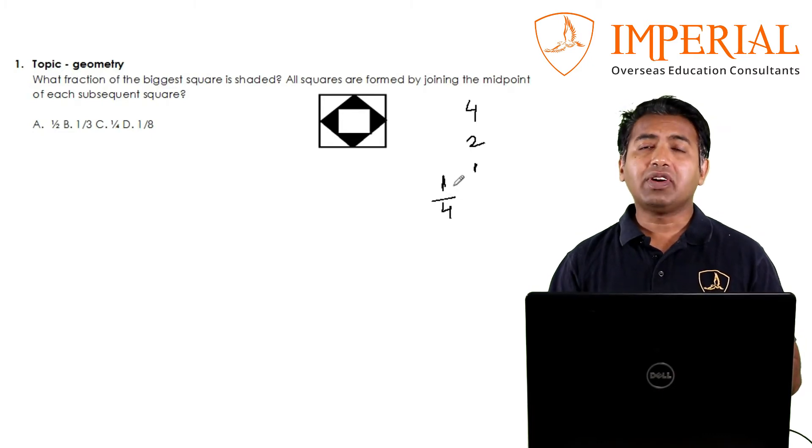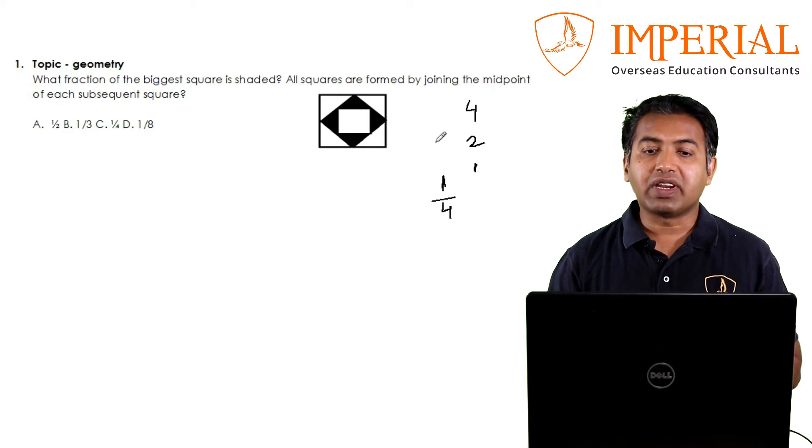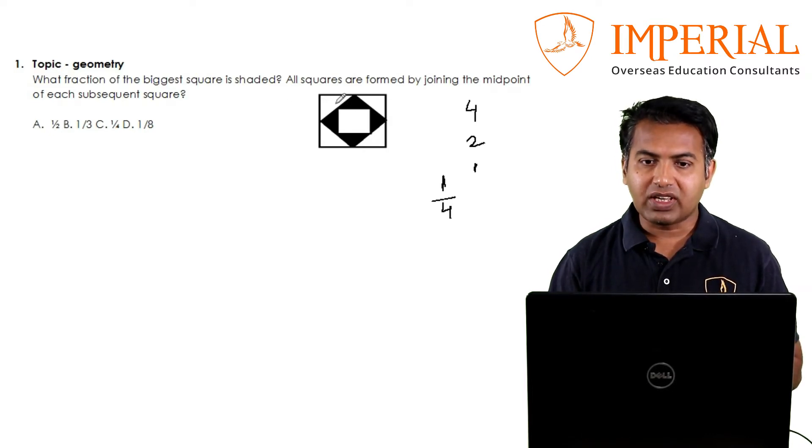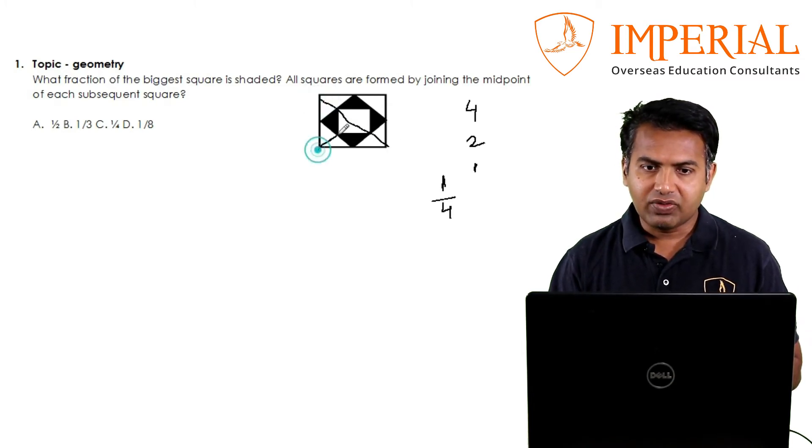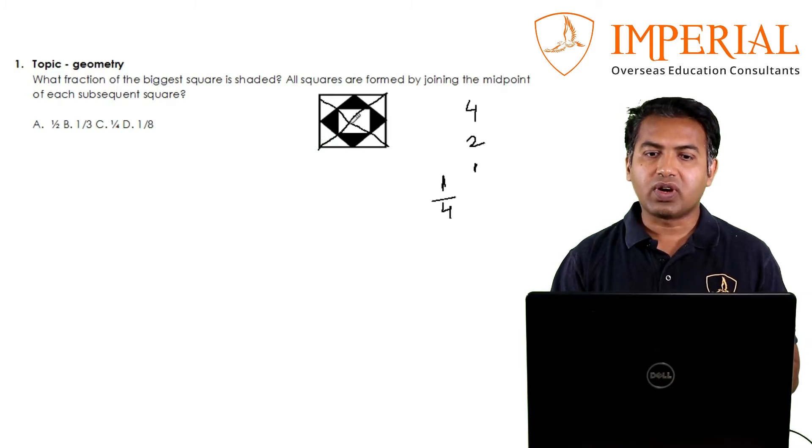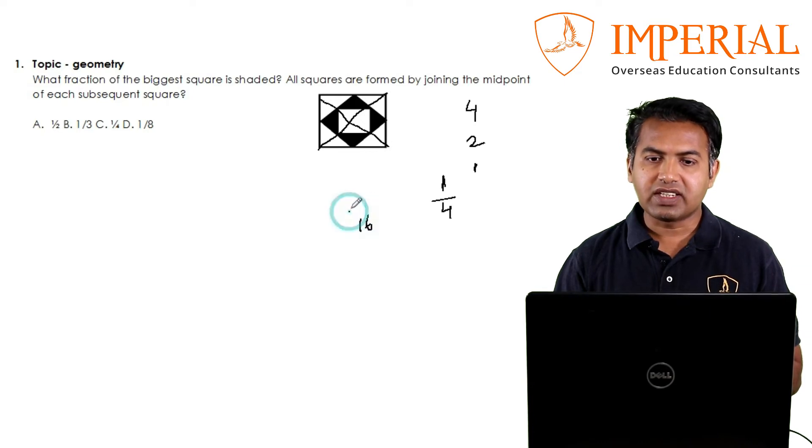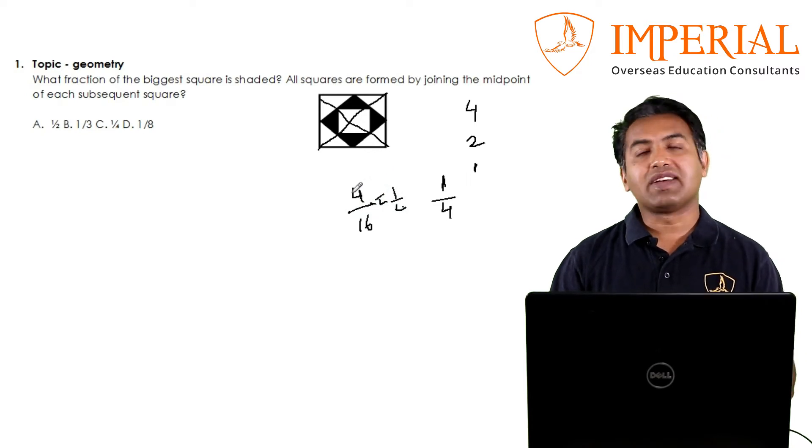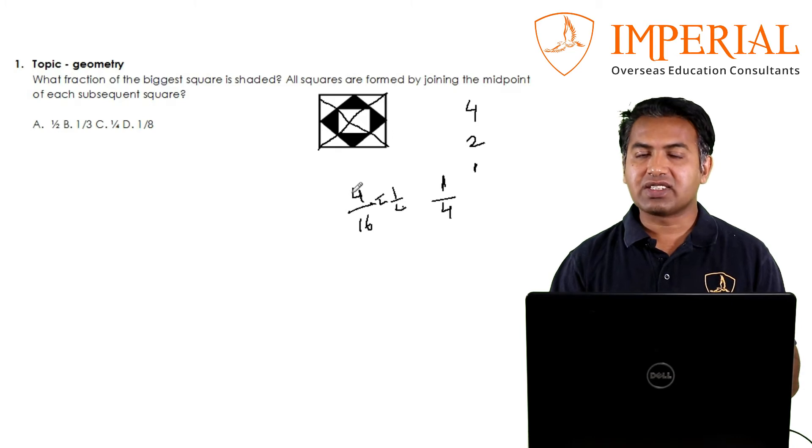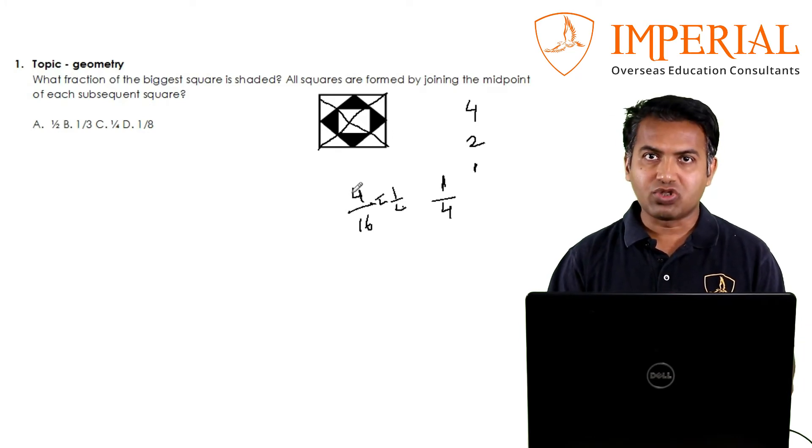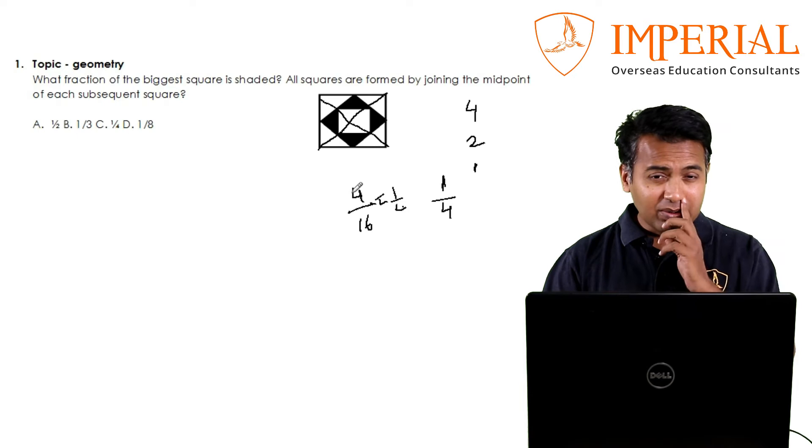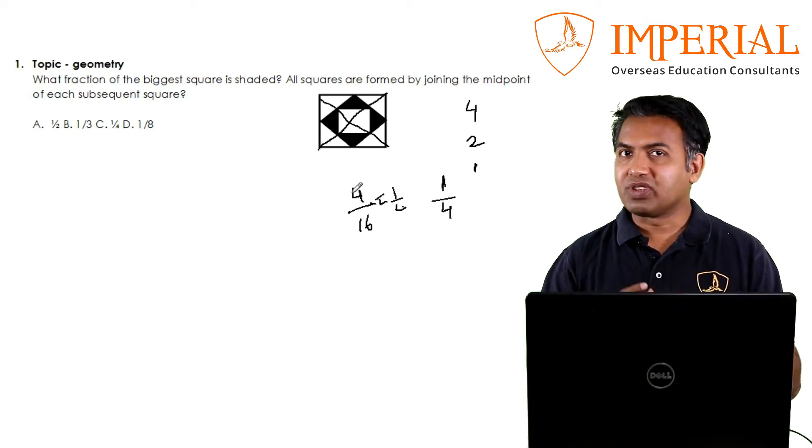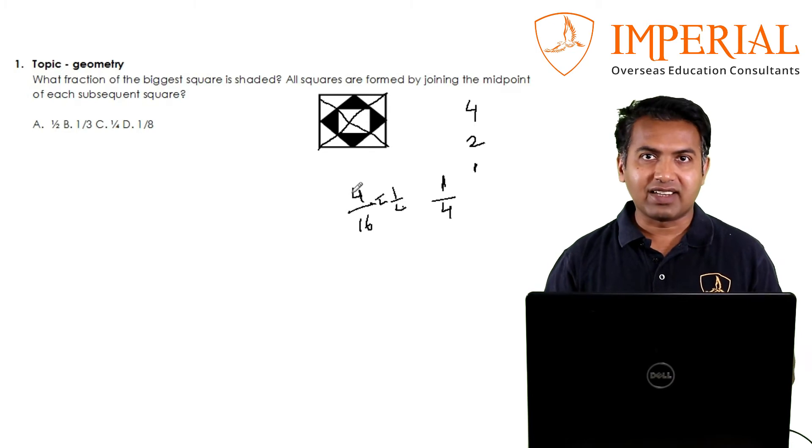Even faster than this is to try and break this figure into equal parts. If you look at it right now they are all unequal parts, but if you just join this diagonal, there are total 16 parts: 1, 2, 3, 4, 5, 6, 7, 8, 8 and 8, 16. Out of 16 parts, 4 are shaded, and that makes the fraction 1 by 4. This is your fastest way. Whenever this kind of question comes, see if you can break it into equal parts. This is what I was trying to tell you: we have to think out of the box, think fast, and think in a way which gives you the correct answer in the shortest possible time.